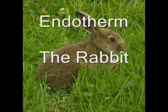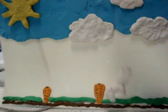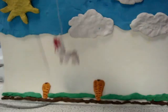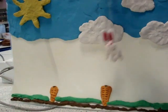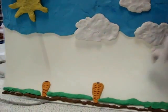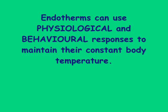The rabbit is an example of an endotherm. Endotherms use internal sources of heat to keep their body at the right temperature. Endotherms can use physiological and behavioural responses to maintain their constant body temperature.